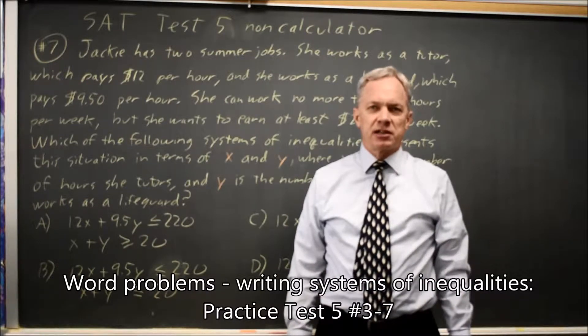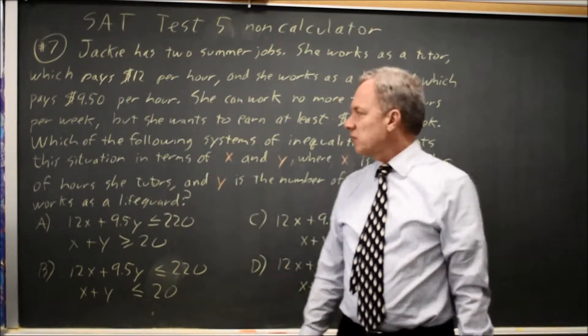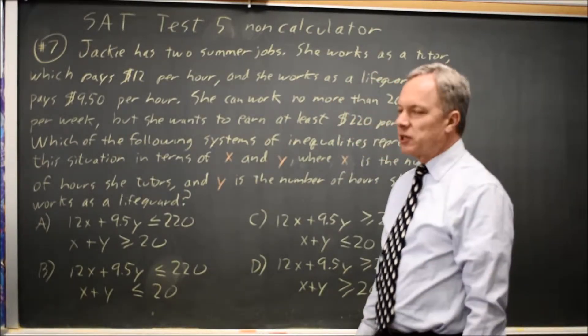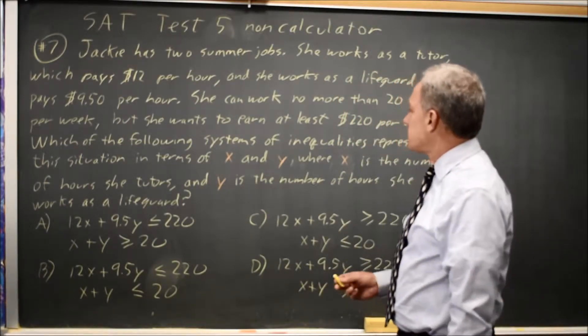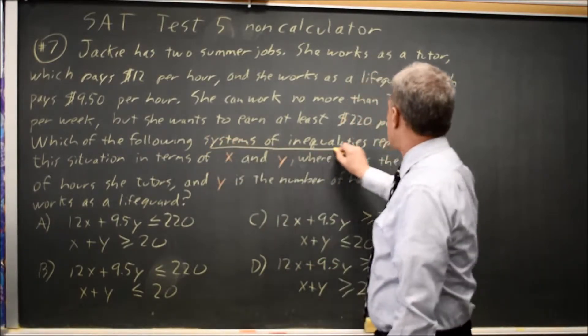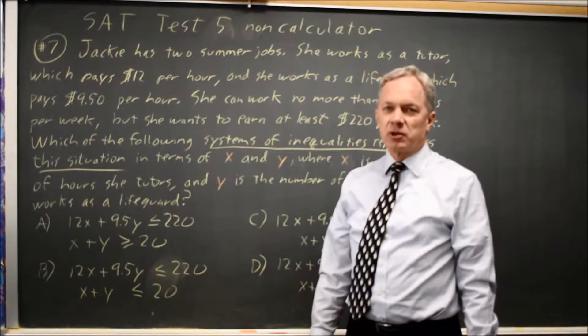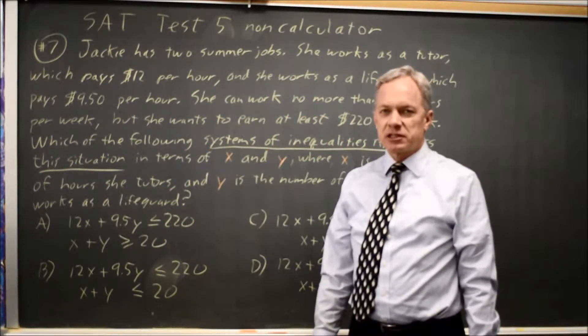This is SAT Test 5, non-calculator, question number 7. College Board gives us a word problem involving writing a system of inequalities. It's easy to recognize these because they say which of the following systems of inequalities represents this situation, and our answer choices all involve systems of inequalities rather than solving those systems.